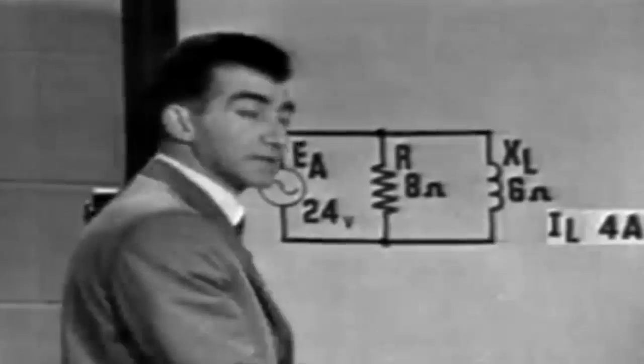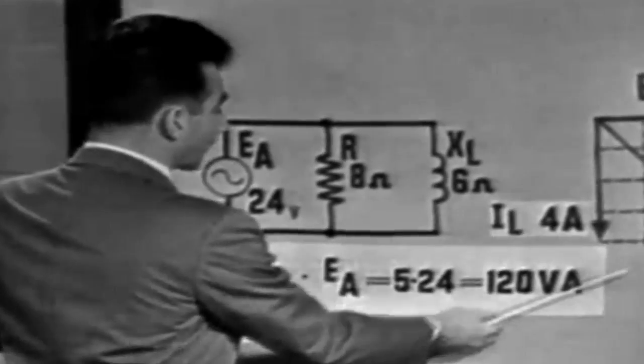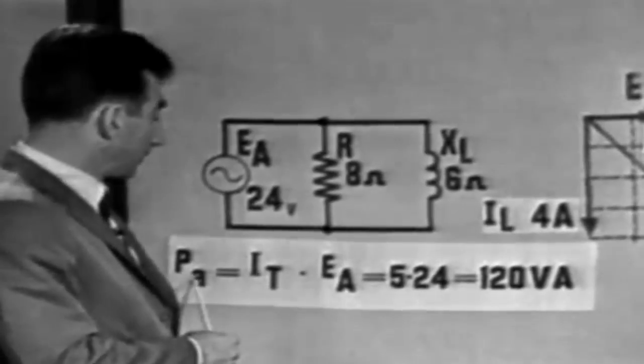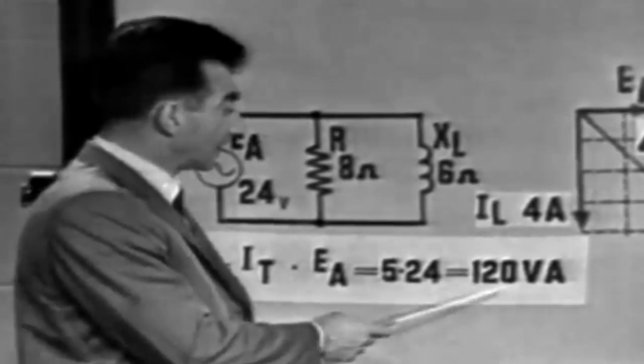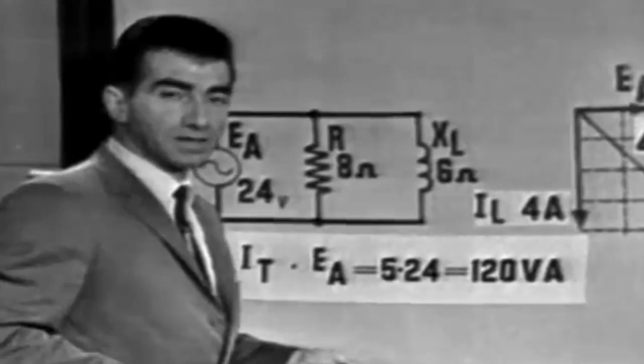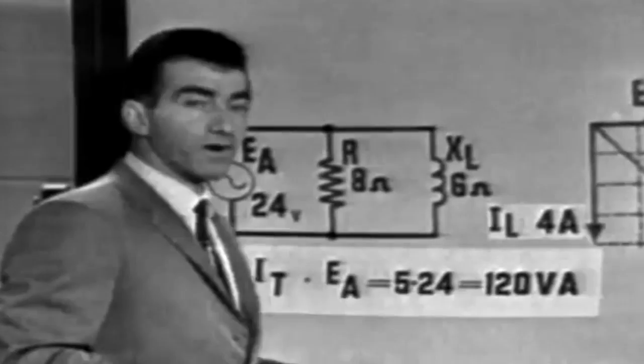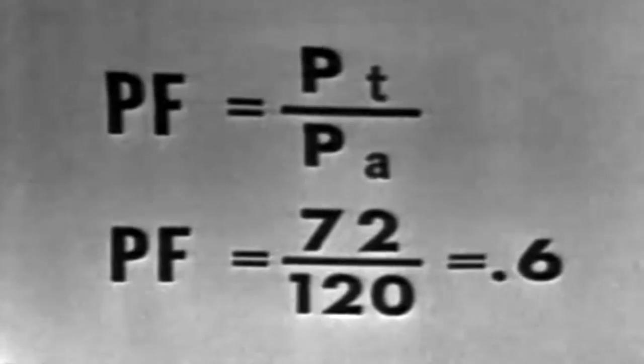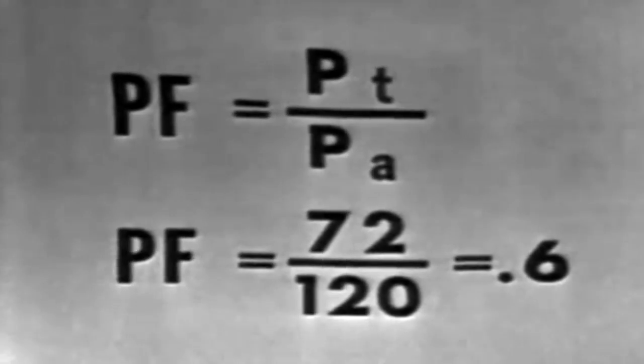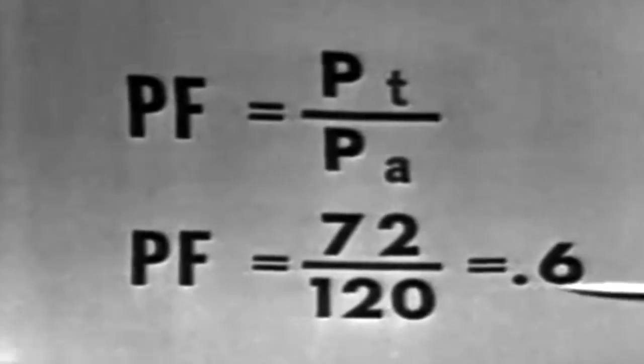We could find apparent power by using the same method, the same formula, P is equal to I times E. But since we're dealing with apparent power, we would use the total current. The apparent power is equal to total current times the applied voltage, or 5 times 24, the apparent power 120 volt amperes. You remember that the power is measured in volt amperes, apparent power measured in volt amperes, because all of this power is not dissipated as heat. Well, now we can calculate the power factor by applying the formula power factor is equal to true power over apparent power, or 72 over 120, or the power factor in our circuit is equal to 0.6, the cosine of angle theta.